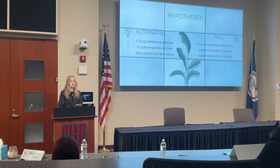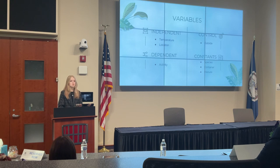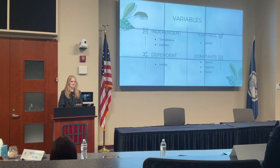After establishing my research question, I hypothesized that if dung beetles are exposed to cold temperatures, then they will become less active, whereas my null hypothesis is that their activity level will not change. My independent variables in the experiment are temperature and location, which will affect my dependent variable of beetle activity. My control group is the beetles outside in the environment they are typically exposed to. My constants are the species of beetle, the type of container the beetles are kept in, when and how often the manure is replenished in each container, and how much is given to each container.